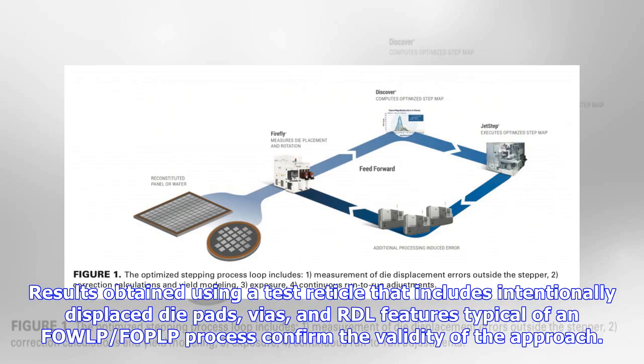Results obtained using a test reticle that includes intentionally displaced die pads, vias, and RDL features typical of an FOWLP process confirm the validity of the approach.